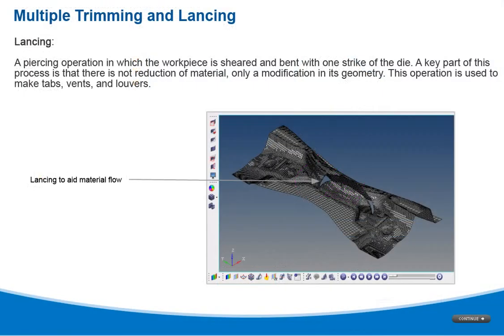Lancing is a piercing operation in which the workpiece is sheared and bent with one strike of the die. A key part of this process is that there is no reduction of material, only a modification in its geometry. This operation is used to make tabs, vents, and louvers.